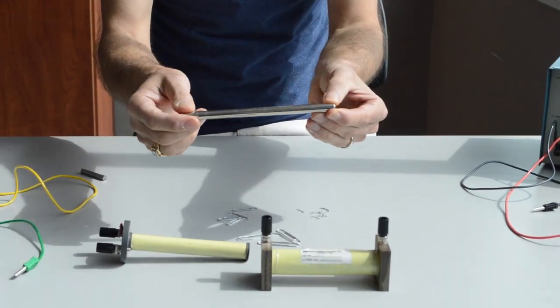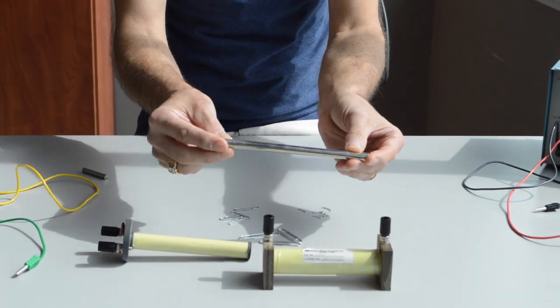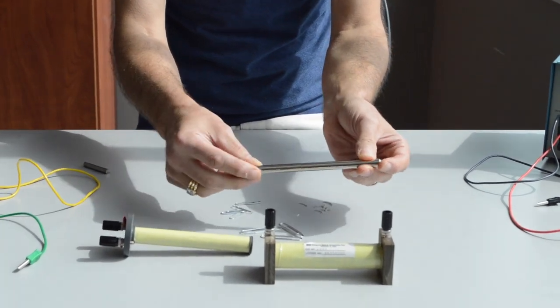And then this is called a soft iron core. It's been chrome plated so it looks nice and shiny, but it's just a piece of iron.